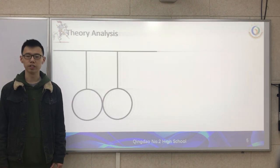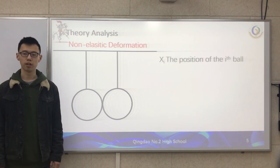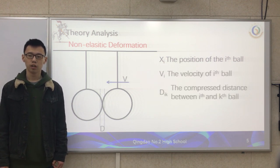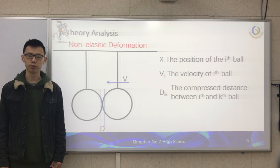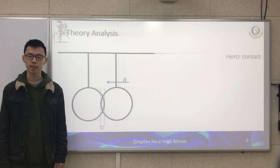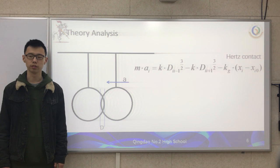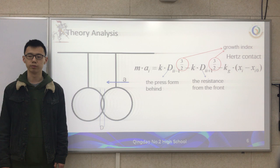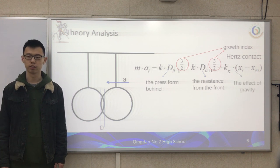We build our model based on the video, and all the deformation of the two balls is non-elastic deformation. X is the position of the ice ball, V is the velocity of the ice ball, D is the compressed distance between the ice and the case ball, and A is the acceleration of the ice ball. We build our theory based on Hertz's contact. According to Newton's second law, we can have this equation. The 3/2 here is the Hertz index. The first term is the press from behind, the second is the resistance from the front, and the last one is the effect of gravity.